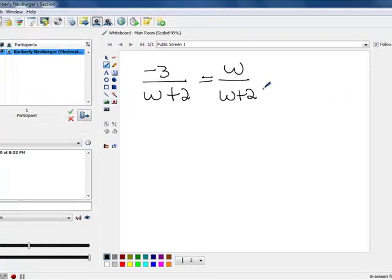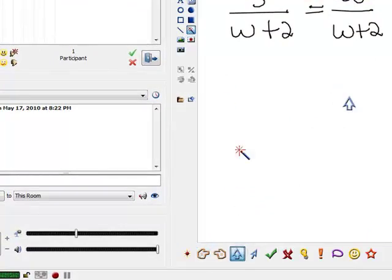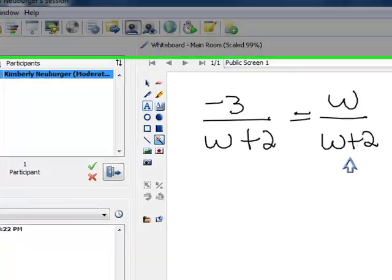The shortcut is the result, gets you to the result of multiplying by the least common denominator a little faster. Now, keep in mind this only works when you have a single fraction, like we do here, on each side of the equal sign. If there's more than one fraction on either side of the equal sign, you cannot do this process. And this process is called cross multiplying.